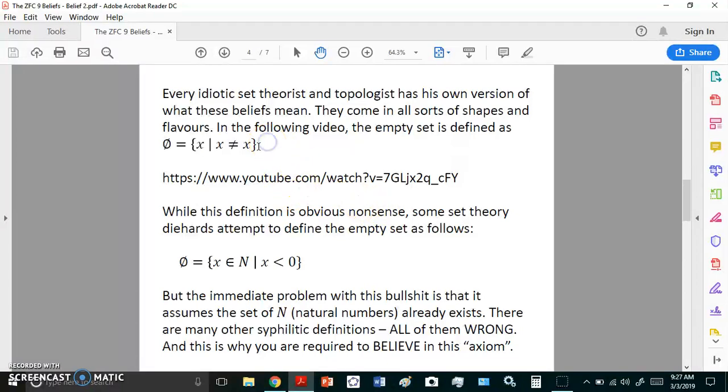While this definition here is obvious nonsense, some set theory diehards will attempt to define the empty set as follows. What that says is the empty set is a set of all X such that if X is an element of the natural numbers, X is less than zero. Of course, there's no natural number which is less than zero, so that set has to be empty. You may think, well, what's wrong with that? It seems perfectly logical. Not actually so, because the immediate problem with this bullshit is that it assumes the set of natural numbers already exists, and that is false. There is no set of natural numbers, because there is no such thing as an infinite set. There are many other syphilitic definitions. All of them are wrong.